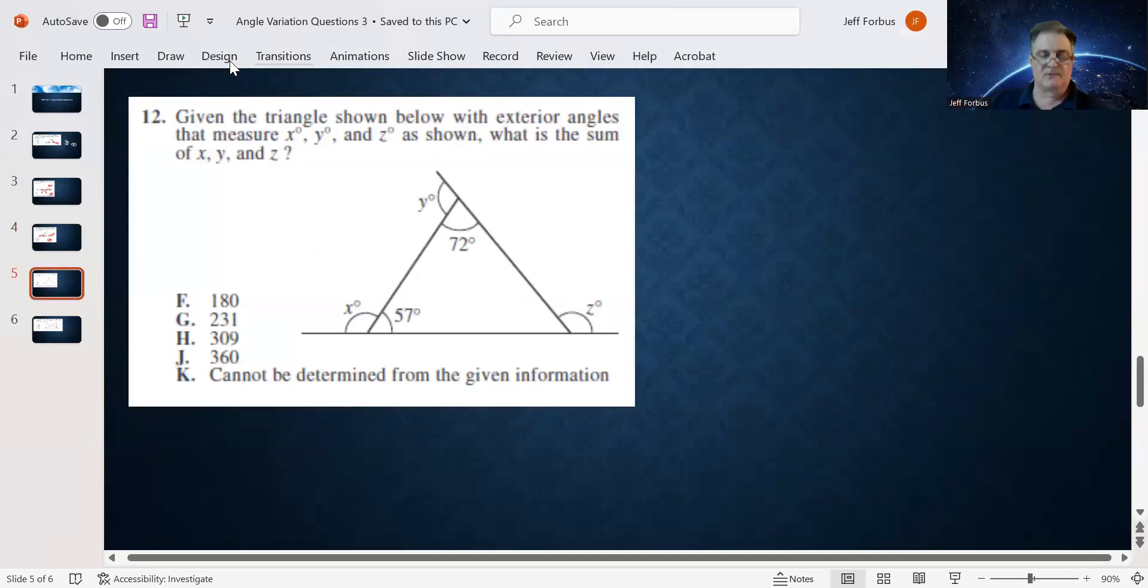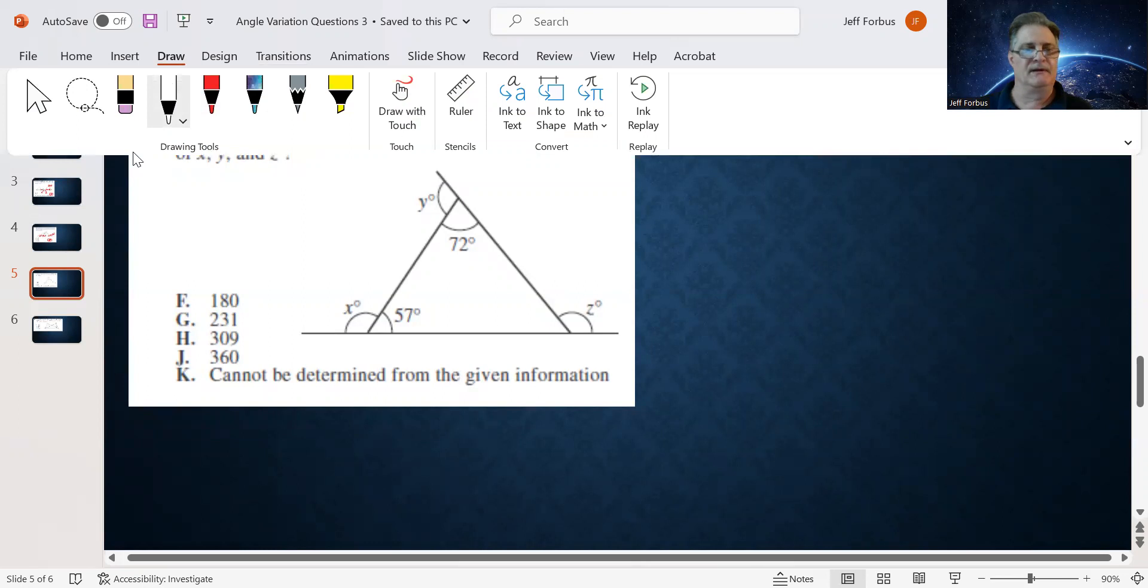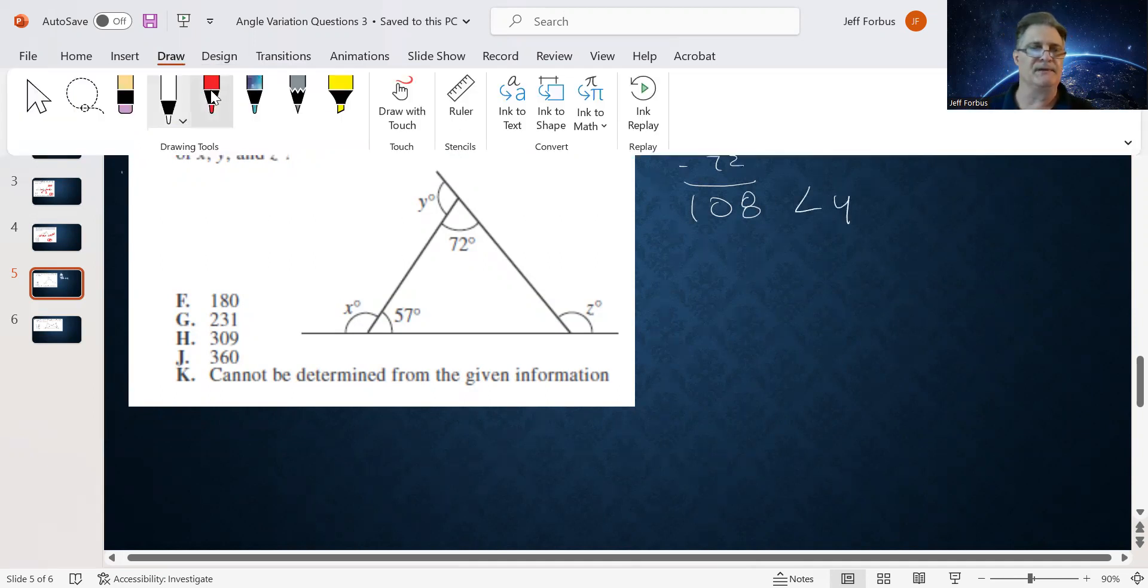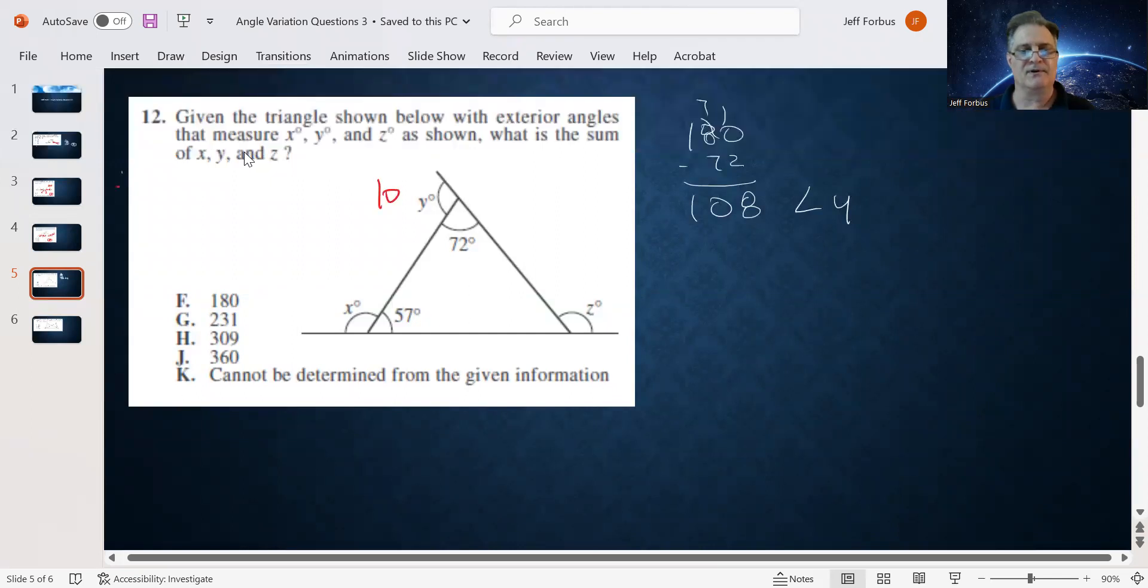Let's move on. Now this particular question says, what is the sum of X, Y, and Z? Well, X, Y, and Z are the angles on the outside of the triangle. So we got to figure out what those are. Let's do a little math here to keep everything straight. Let's start with angle Y. Well, up here we already see that we have 72 degrees. So 180 minus 72, that's going to be 108. So angle Y is 108. Let me write it on there. So 108 degrees.